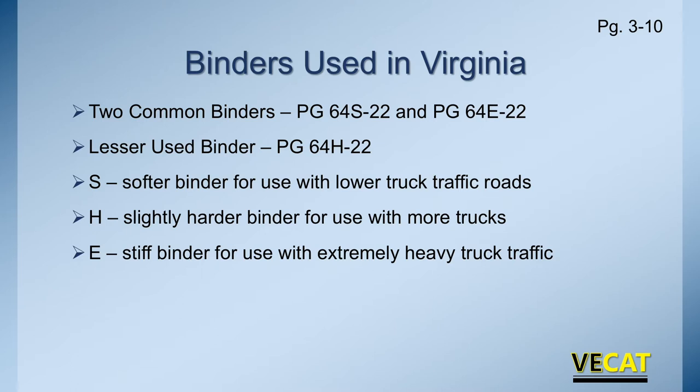S is a softer binder, corresponding to pre-MSCR testing where we called it a 64-22. H is a little harder — this would be our 70 minus 22. And E, in the old nomenclature, would be our 76 minus 22 — our interstate mix or where we have lots of heavy traffic.